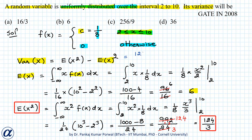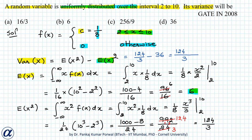So the variance of x equals E[X²] minus (E[X])², that is 124/3 minus 6², which is 124/3 minus 36. Taking 3 as the common denominator gives (124 − 108)/3 = 16/3. So our answer is 16/3 and the correct option is confirmed.